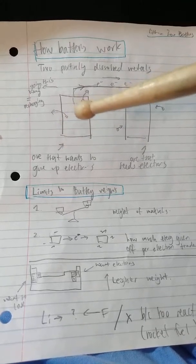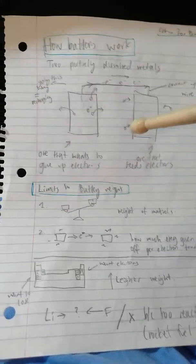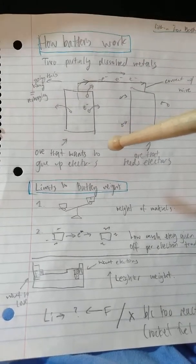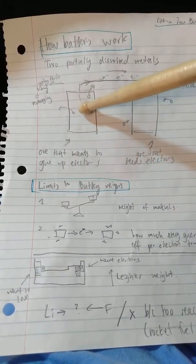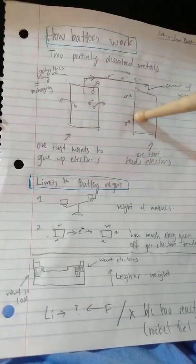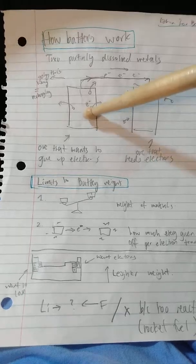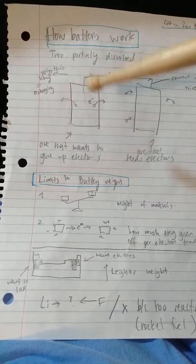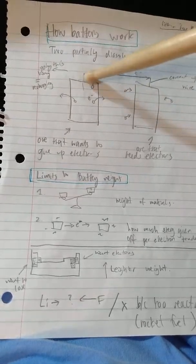Basically, batteries work pretty simply. There's two partially dissolved metals. One of the metals wants to give up electrons, and one of them wants to receive electrons. This one wants to receive it, this one wants to give it up.